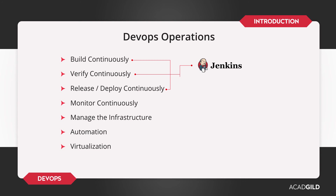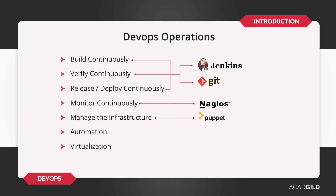The versioning process of your project files and code can be done by implementing Git. This tool enables you to keep track of the project history. Next comes continuous monitoring and managing the infrastructure as code, and this can be achieved by Nagios and Puppet, respectively. There are other alternative tools for Puppet like Ansible, Chef, etc. You can choose to go with any tools of your choice, but our choice for this DevOps course will be Puppet.